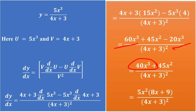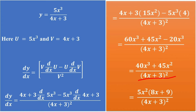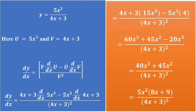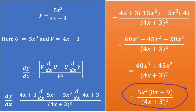So which equals 60x³ minus 20x³ = 40x³, plus 45x², divided by (4x + 3) squared. From the numerator, 5x² is a common factor, so taking 5x² outside gives 5x²(8x + 9) divided by (4x + 3) squared.